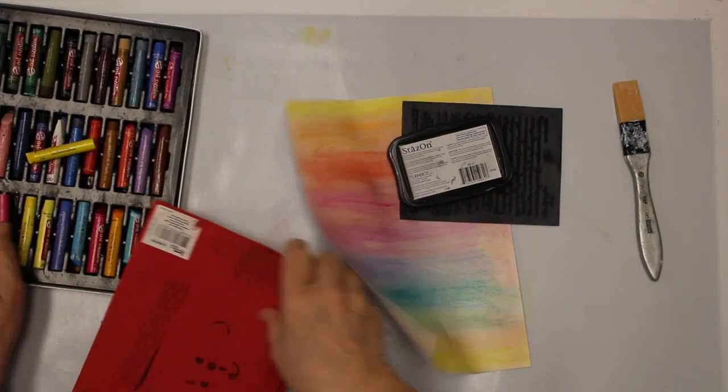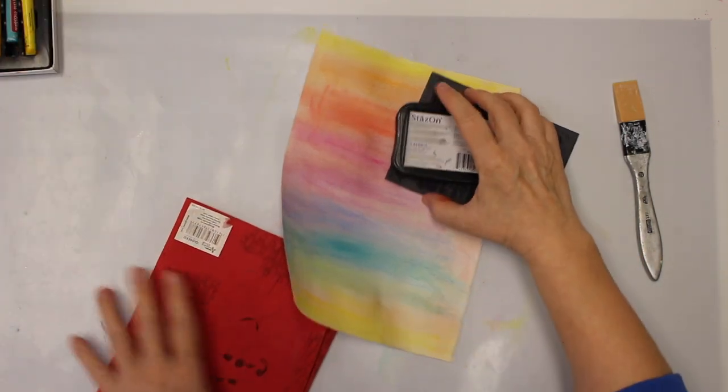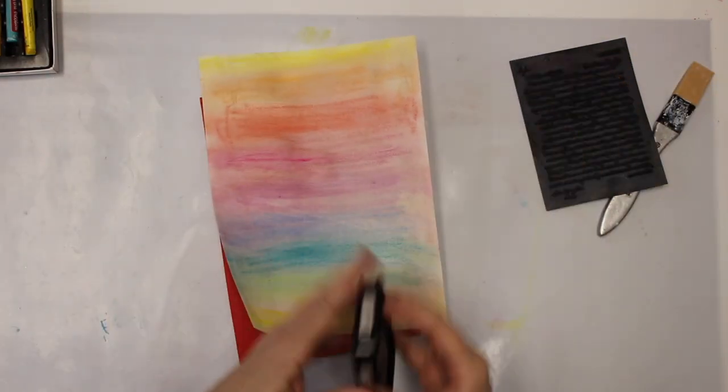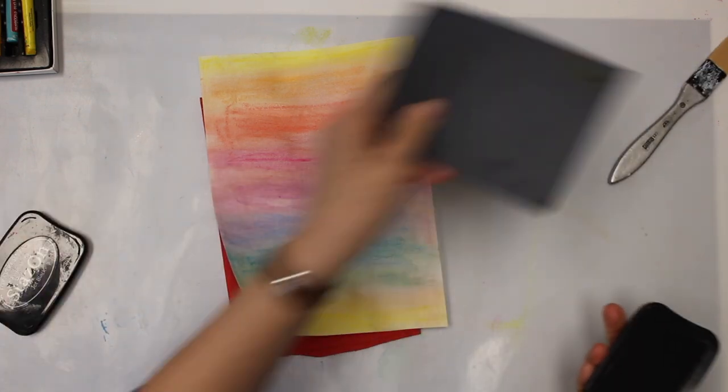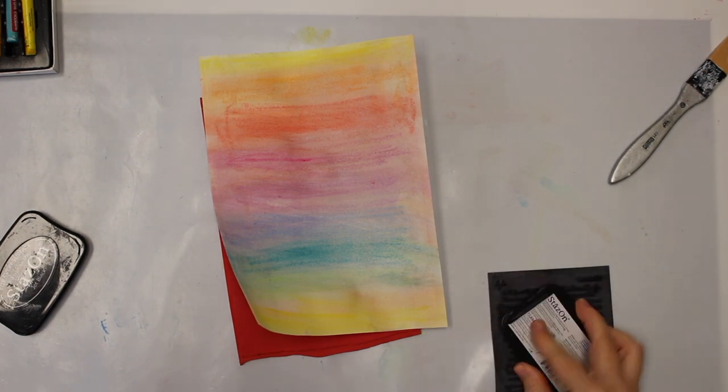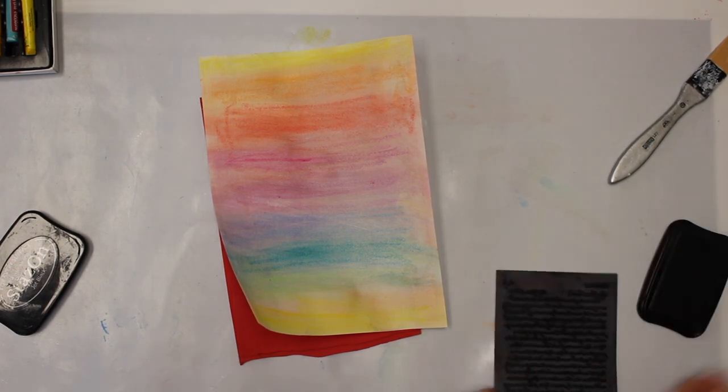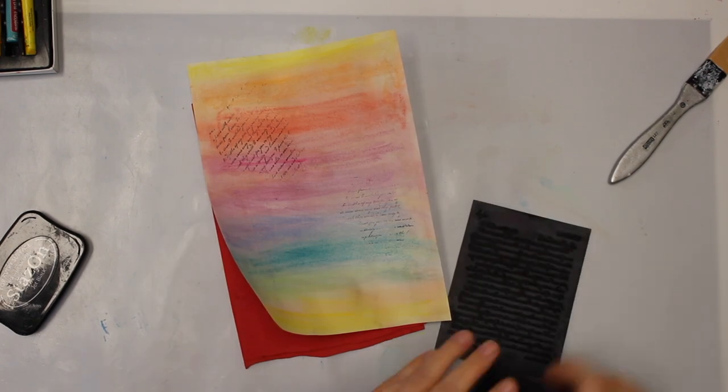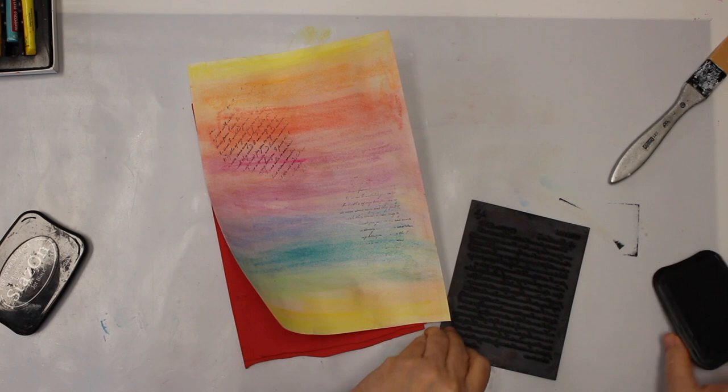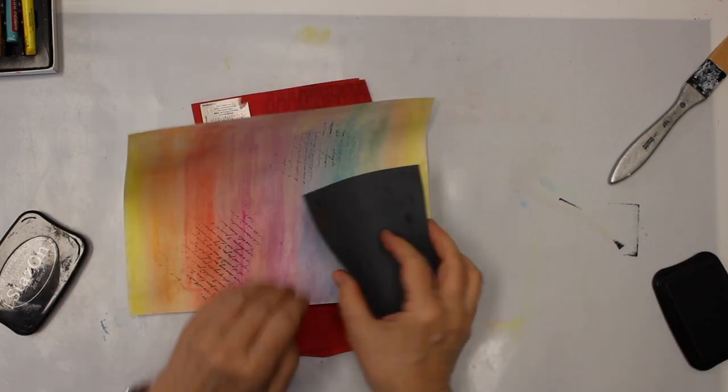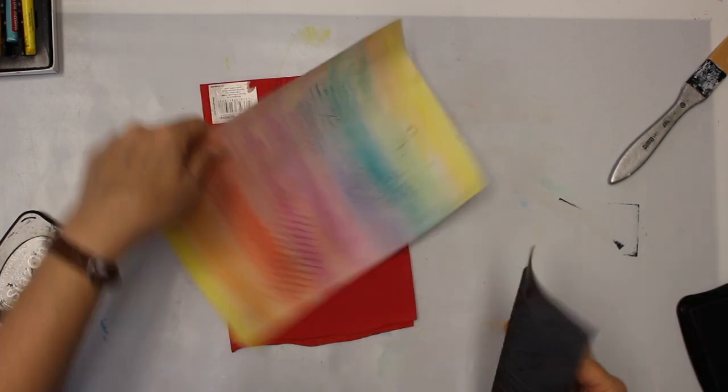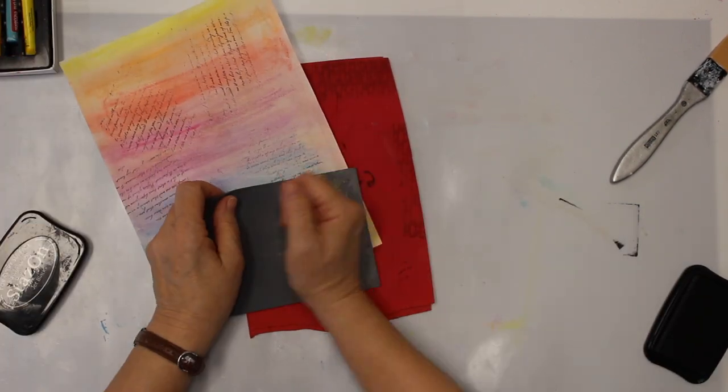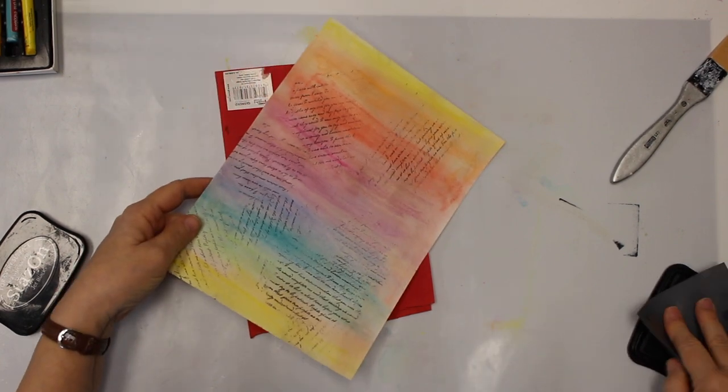Next I'm gonna go in with some Stazon. I just always like to have a little bit of a script going on in the background. I'm using two pieces of foam because there is just a plain rubber stamp with no cushioning. I don't look for a perfect print, I just want something going on so I also switch direction and I switch the areas where I add the ink and I don't mind if it is overlapping. In fact, I like it.